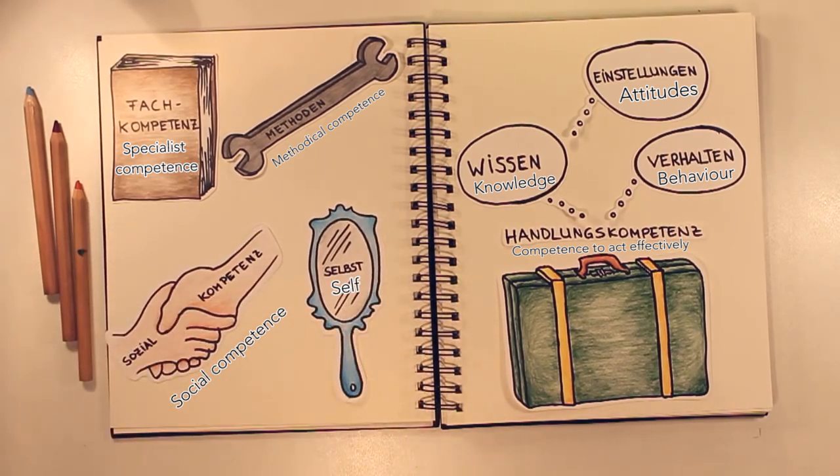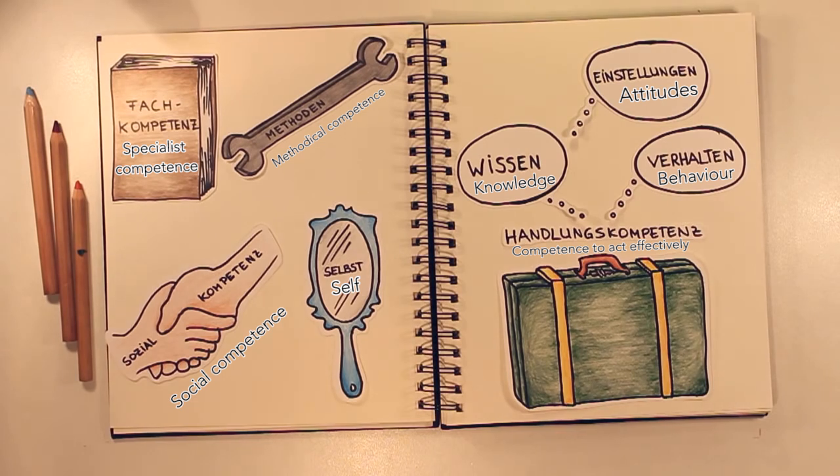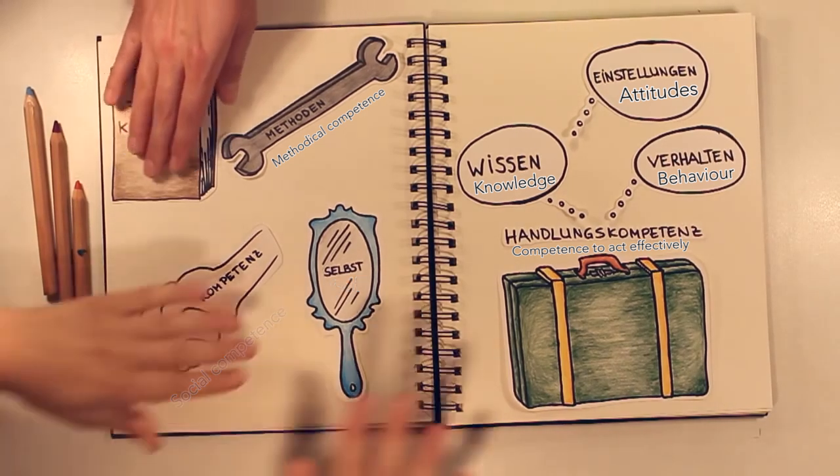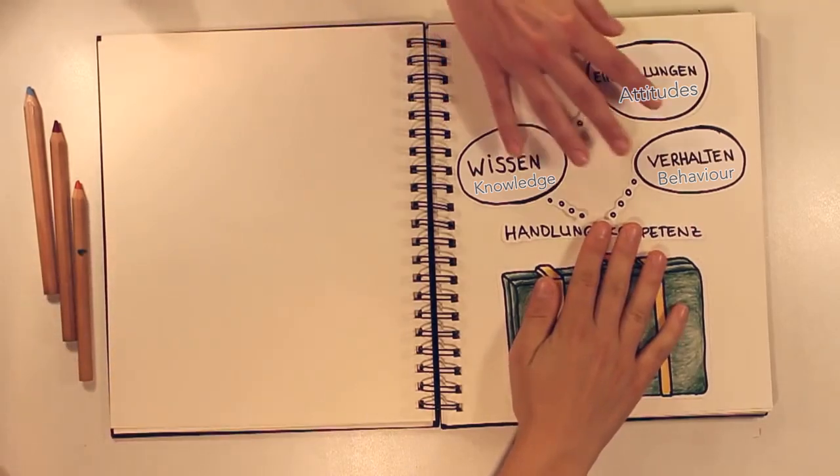Furthermore, we need to train self-competence, for which self-reflection is particularly important. On the attitude level, self-competence can be seen through our motivation and willingness to learn, while on the behavioural level, it expresses itself through constructive criticism and responsibility. Once we have trained these part competencies, we can act effectively in most familiar situations.